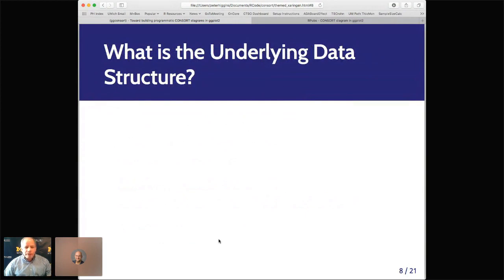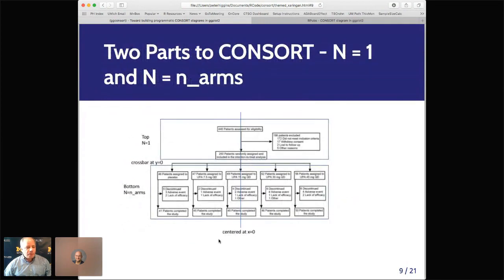But the problem is, there isn't a clear underlying data structure. And this is where I spent some time trying to think about this in March, when Michigan was pretty much shut down. And it immediately occurs that there are two different parts of the consort diagram. There's the top section, where you basically have one of everything, assessment, randomization, and exclusion. And then the bottom section, where the number of things is related to the number of arms.